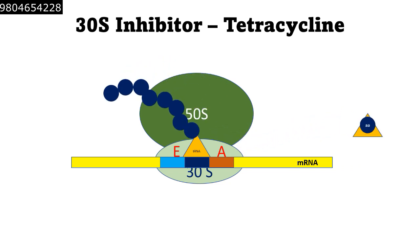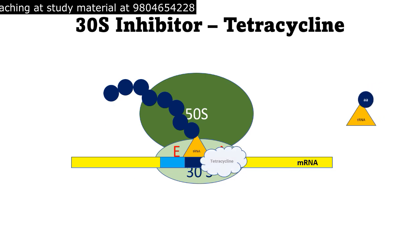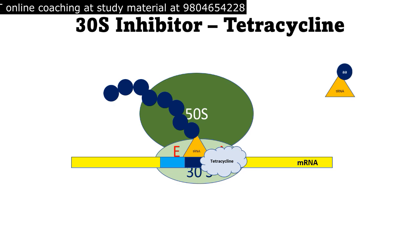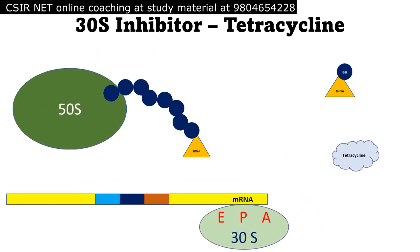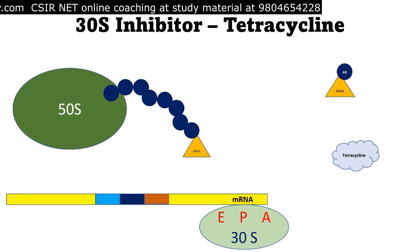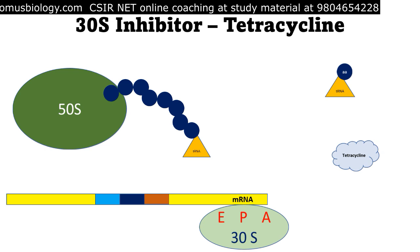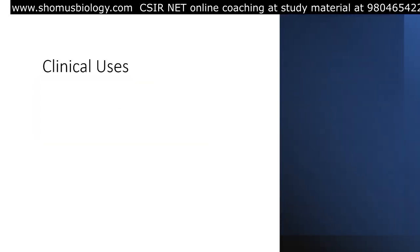When tetracycline antibiotic is present, it comes and blocks the A site of the 30S ribosomal subunit. It will not allow charged tRNA to bring amino acids to the A site. As a result, protein synthesis is inhibited, all components dissociate, and the cell stops growing. That's why many of these antibiotics are bacteriostatic, though at longer duration and high dosage they can become bactericidal and kill the bacterial cell.